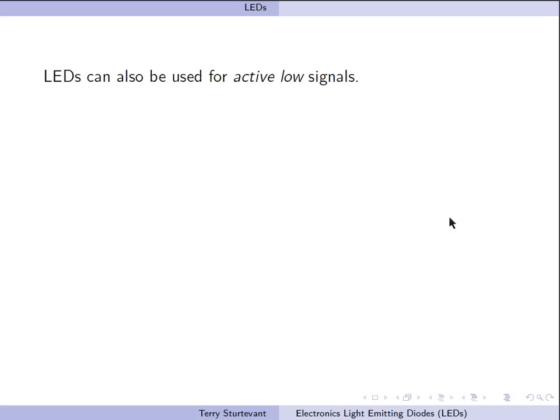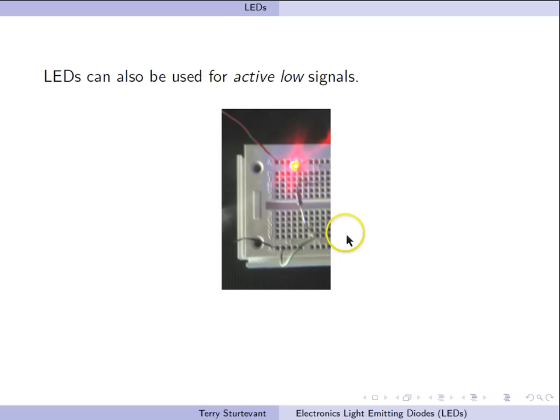We can use an LED for active low signals, like this. Now our signal, which is indicated by this green wire, goes to ground in order to light up the LED. Because we have the LED going from power to this row. The resistor goes from this row to this row. And then the bottom of the resistor is connected by our signal to ground. So grounding it lights up the LED.